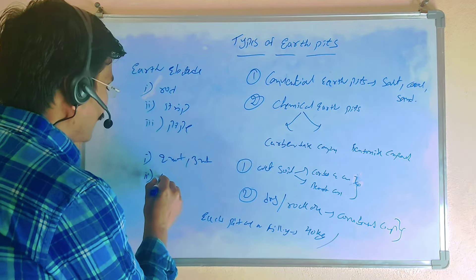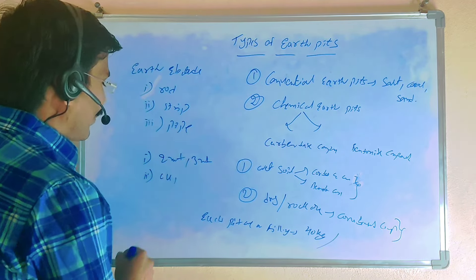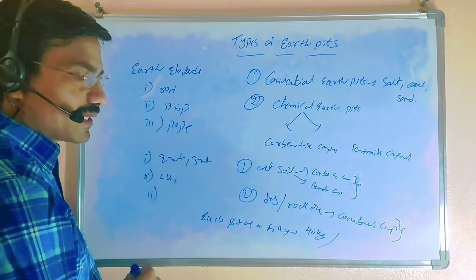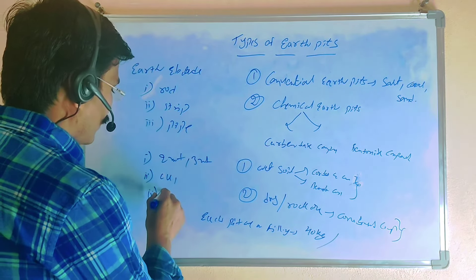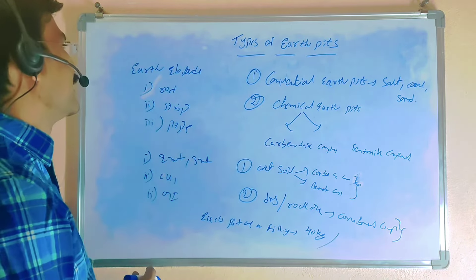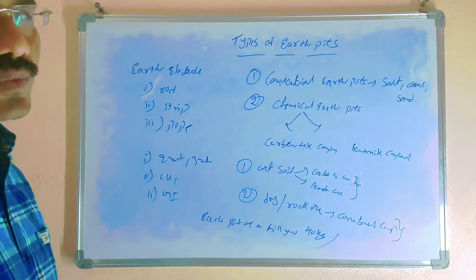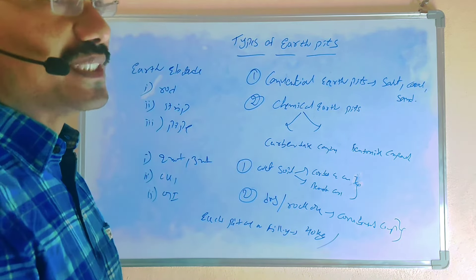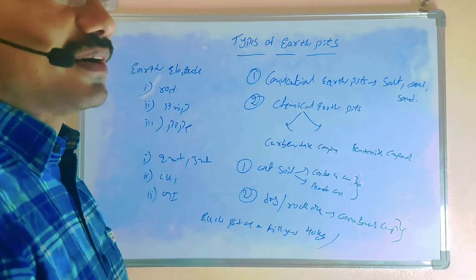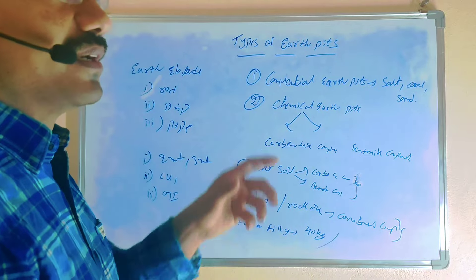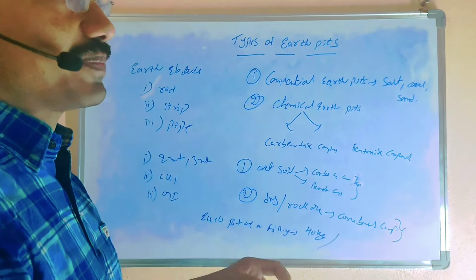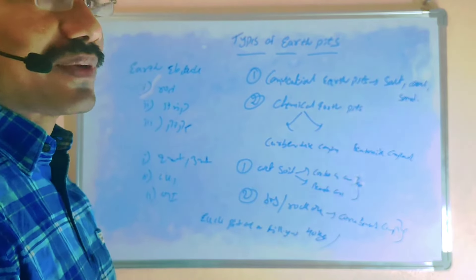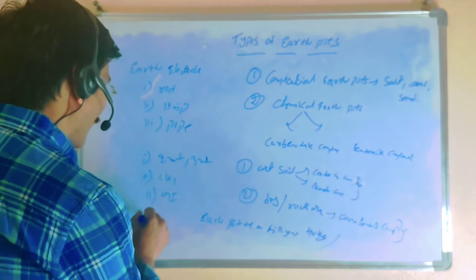If it is the neutral earthing, we are using only copper material. If it is the body earthing, we are using GI electrodes. Somewhere we are using both — mixing, where the pipe is GI and the strips are copper.